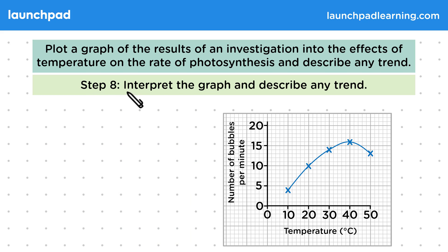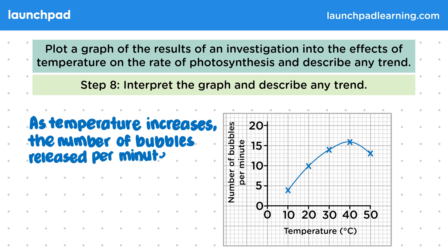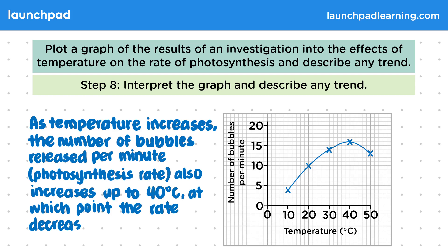Step eight: interpret the graph and describe any trend. You should describe the trend by mentioning what happens to the dependent variable as the independent variable changes. For example, we may say that as temperature increases, the number of bubbles released per minute, or the photosynthesis rate, also increases up to 40 degrees C, at which point the rate of photosynthesis decreases.